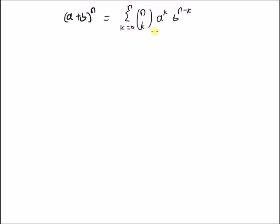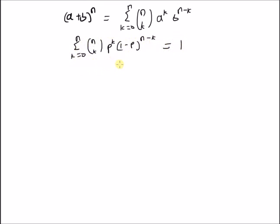We want to prove this using a probability fact given by the summation from k = 0 to n of n choose k times p^k times (1 − p)^(n−k) equals 1. That is the fact that the binomial distribution is normalized.